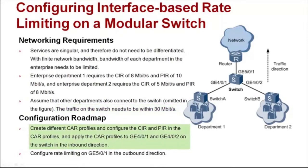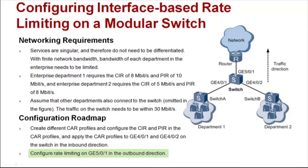To meet the requirements, create CAR profiles for Enterprise Departments 1 and 2, configure the CIR and PIR in the CAR profiles, and apply the CAR profiles to GE4/0/1 and GE4/0/2 on the switch in the inbound direction. On GE5/0/1 of the switch connected to the router, configure outbound interface-based rate limiting to limit the rate within 30 Mbps.